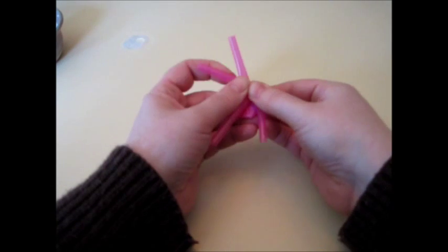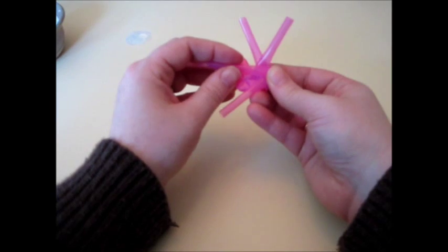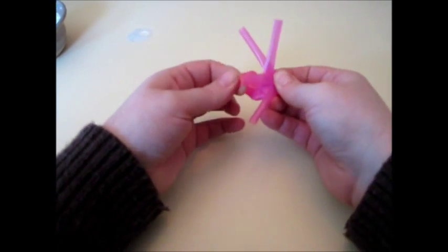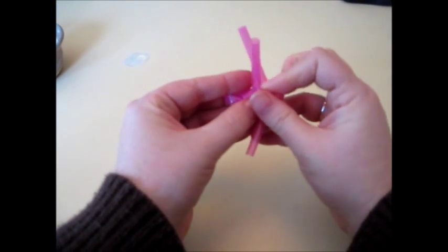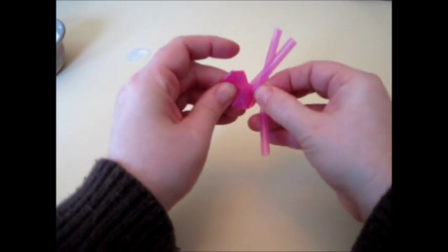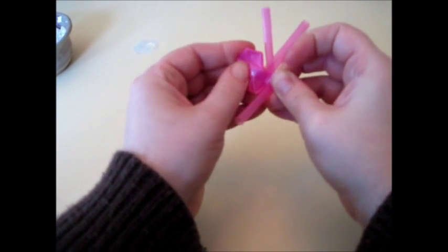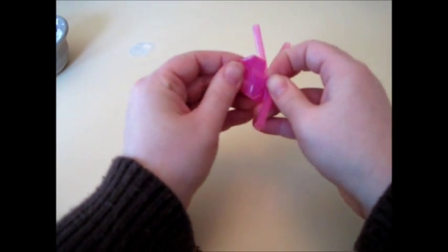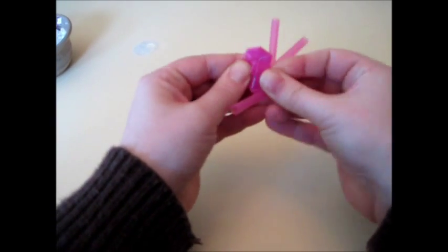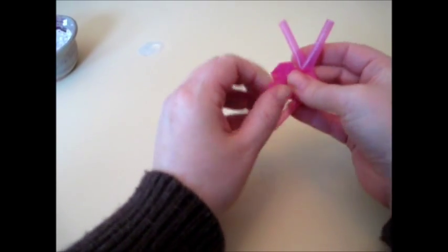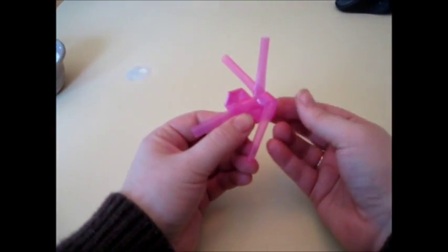and you're going to take this first one and tuck it through this middle area. It might need a little convincing to get through. You can always widen it with a pair of scissors that are closed, and pull it through. It will look like this.